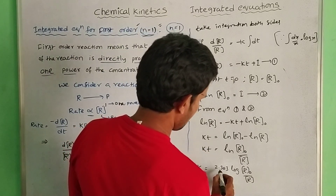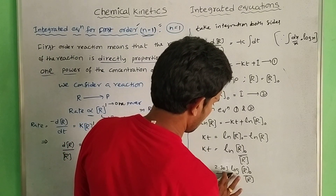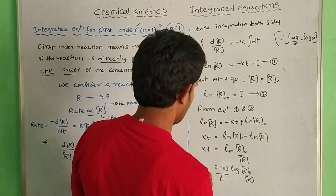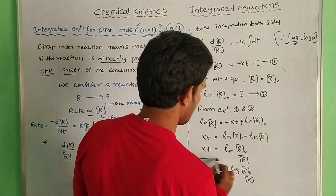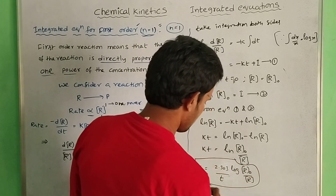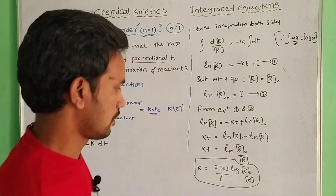Converting ln to log: k equals 2.303 divided by t, times log of concentration of R₀ by concentration of R. This is the first order integrated equation.